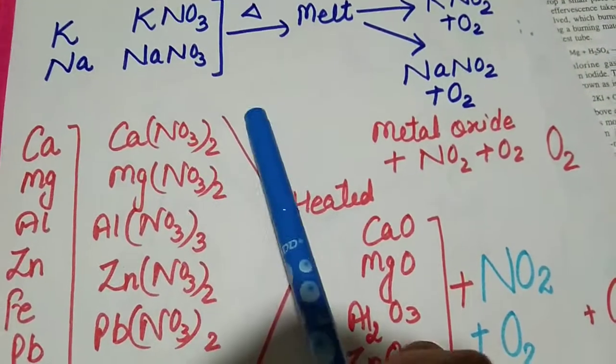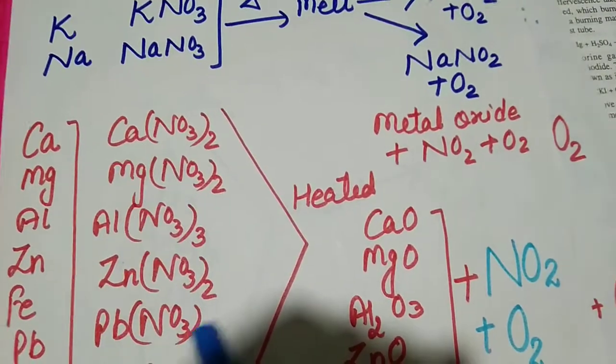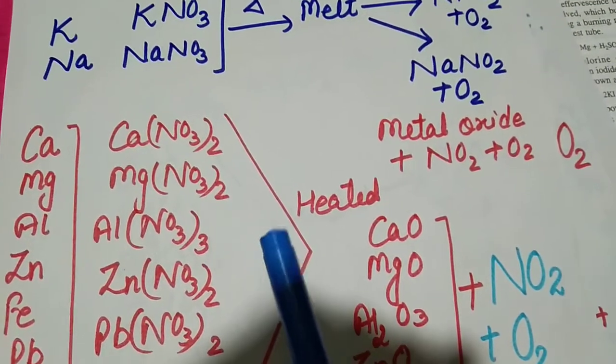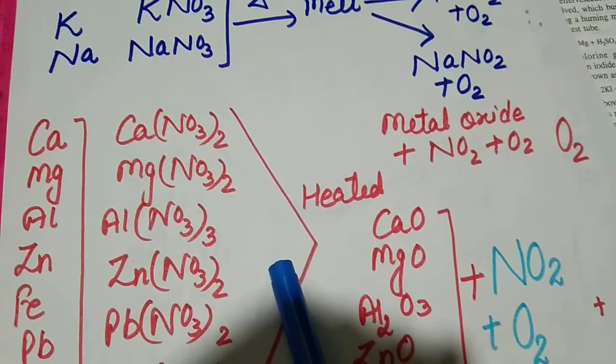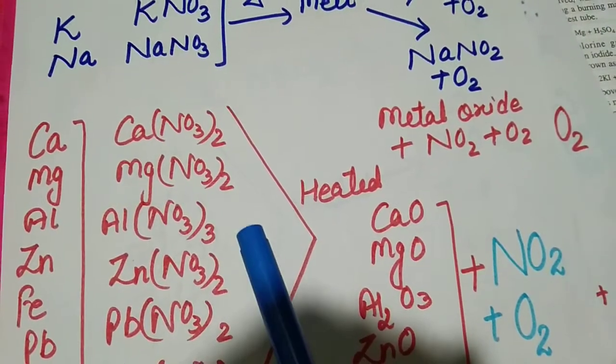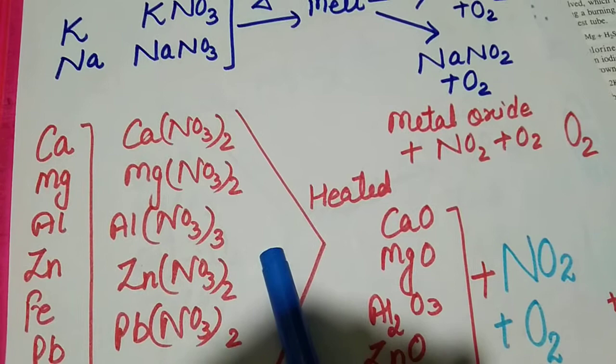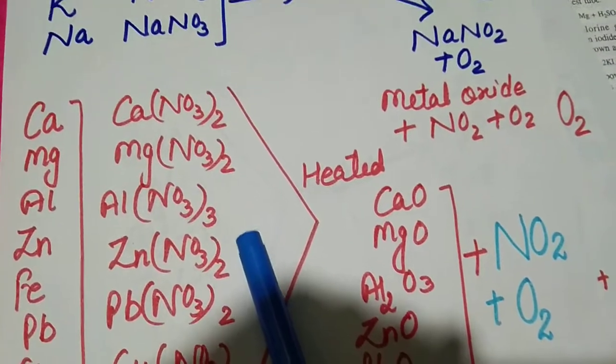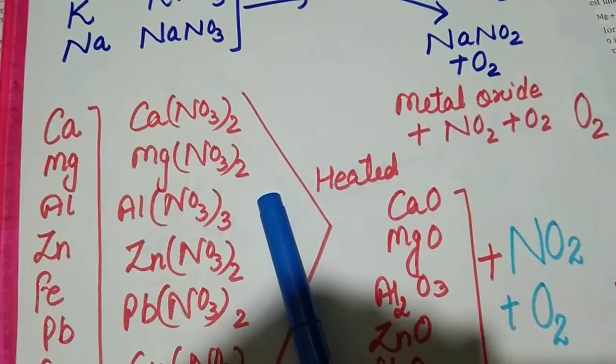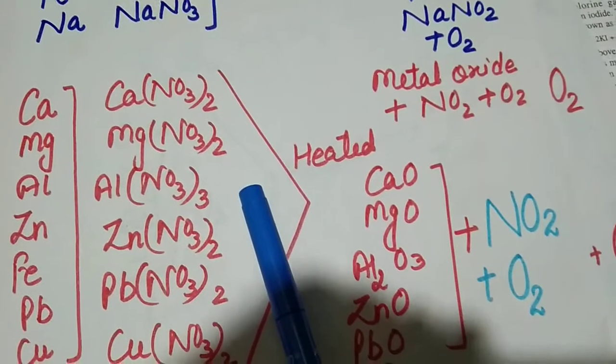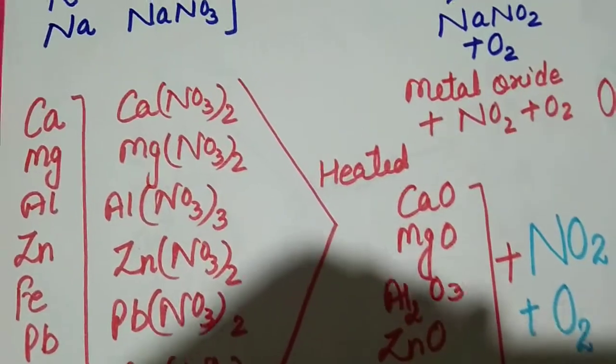Students keep one thing in mind which is very important. When you write these reactions, they should be balanced. Unbalanced equations get no marks, because unbalanced chemical equations do not obey the law of conservation of mass and according to chemistry they are wrong equations.